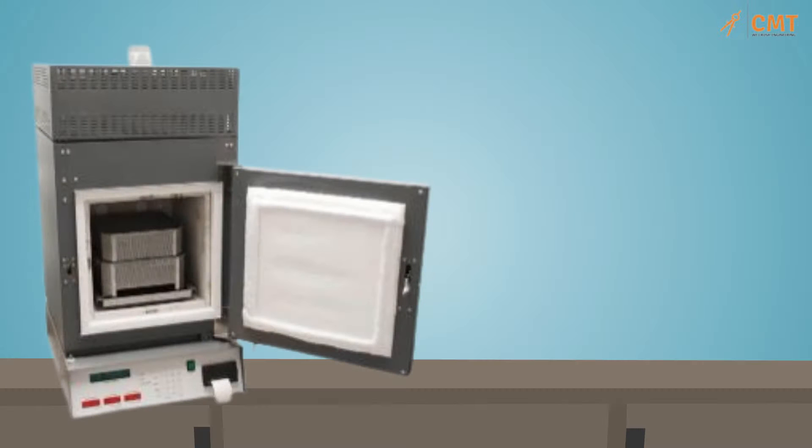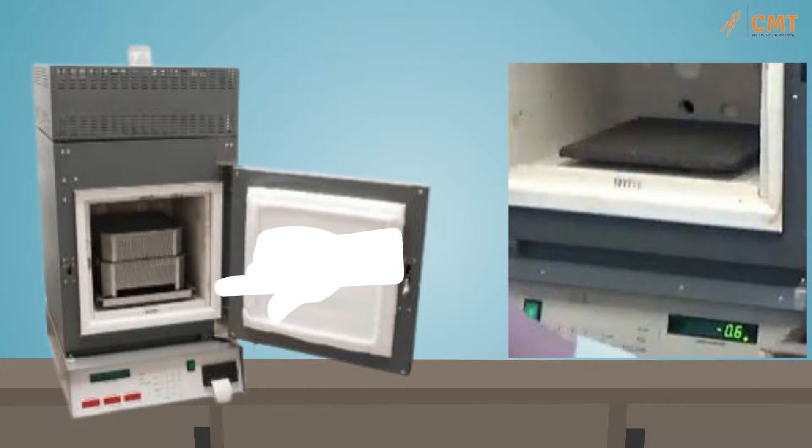Open the ignition oven door. Stand behind the door as it opens to prevent possible burns. Using the loading fork, load the basket assembly into the oven, placing it gently on the ceramic scale platform.